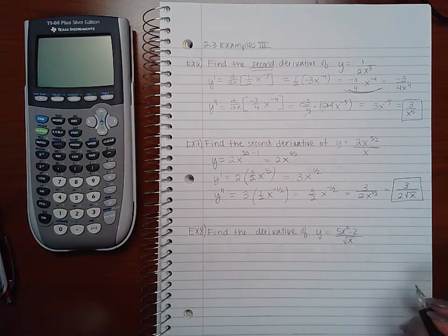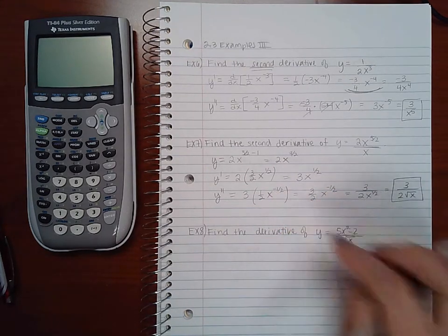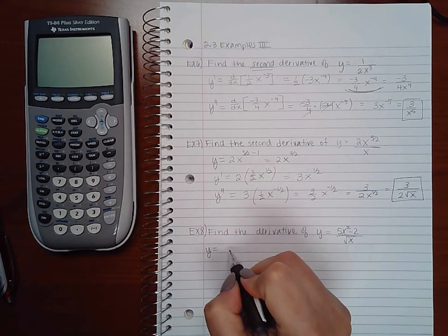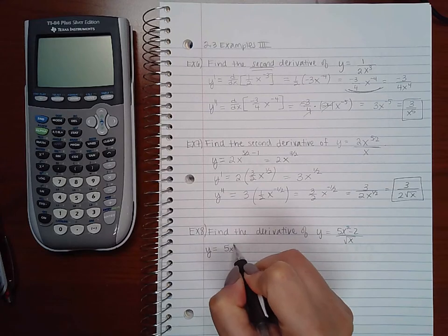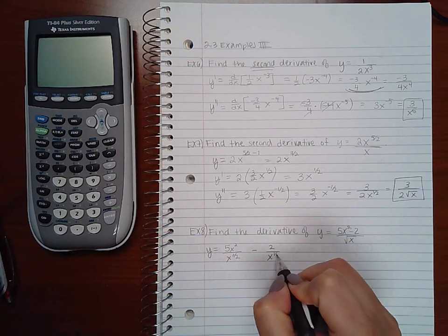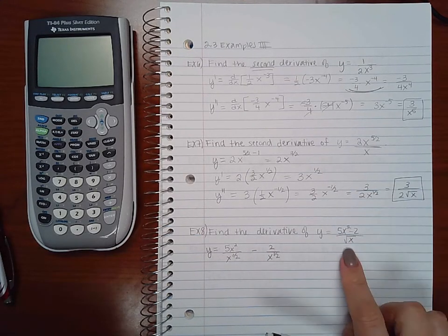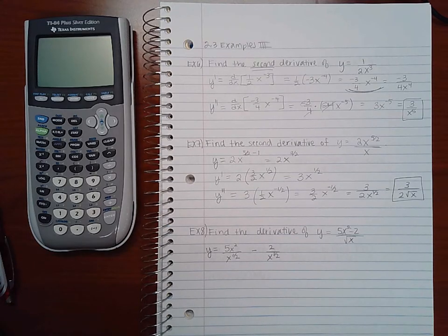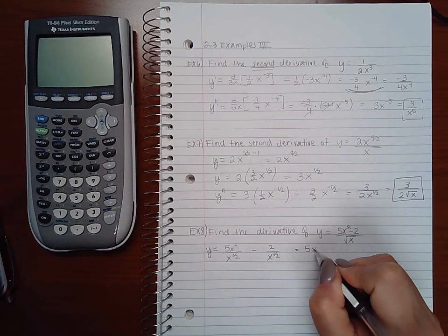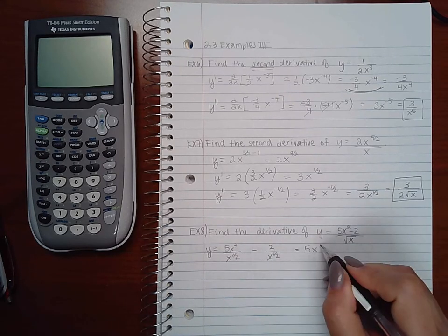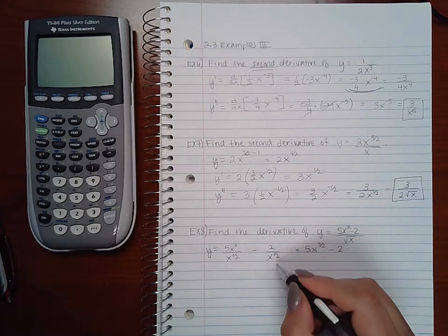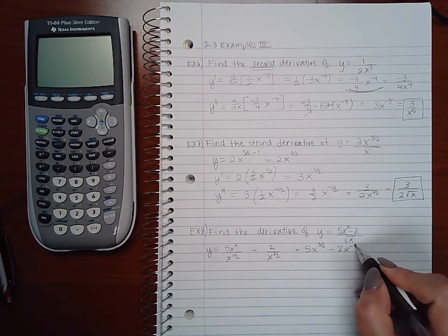Now, example 8, I can do as well the same kind of thing that I did for example 7. So before I take the derivative, let's rewrite this. That's x to the 1 half minus 2 over x to the 1 half. So I took each term over this denominator, and I wrote the denominator as a fraction exponent. So then I'm going to have 5x2 minus 1 half is going to be 3 halves. And since there's nothing to subtract here, I'm just going to get x to the negative 1 half.